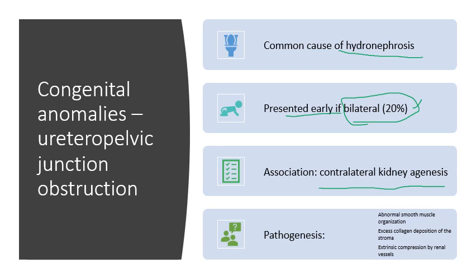It is important to identify these patients early so we can correct the ureteropelvic junction obstruction and preserve the normal kidney from scarring. For the pathogenesis, it can be caused by either abnormal smooth muscle organization, excess collagen deposition in the stroma, or extrinsic compression by renal vessels — all usually due to congenital anomalies.